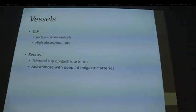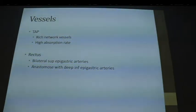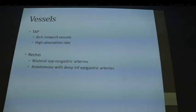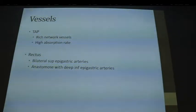Another important thing to know about is the vessels. Within the transverse abdominus plane — that is, between transverse abdominis and internal oblique — there is a rich network of vessels, and that has an impact on the volume of local anaesthetic you can put in there and the absorption rates. In the rectus sheath you have bilateral superior epigastric arteries, which anastomose with the deep inferior epigastric arteries. So it's very important when doing these blocks to use Doppler to check for vessels.